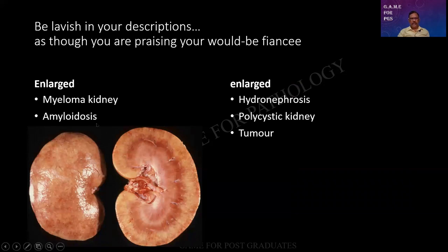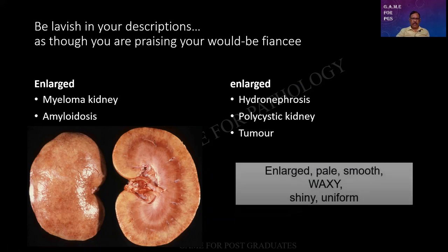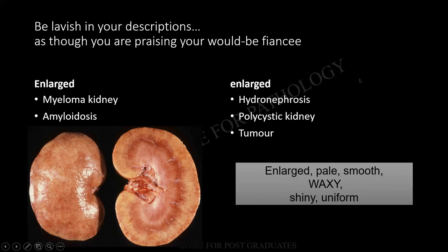Amyloidosis: the kidney is enlarged, pale, glistening, waxy, smooth, and not difficult to cut. Myeloma kidney can also be present because myeloma itself is one cause for amyloidosis — AL amyloid can be present. Coming to the enlarged kidney, it can be bulging because of hydronephrosis. It can be a polycystic kidney — adult polycystic will have a bosselated appearance, whereas infantile will have radial cysts, not difficult to make out when cut, though the external surface can be uniform. Tumor is another cause. Waxy, pale, smooth, shiny — these are the descriptive words for an amyloid kidney.